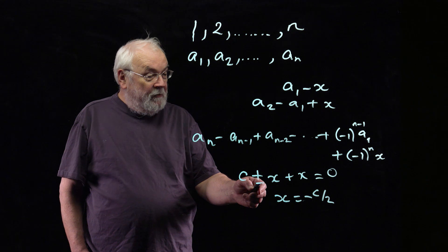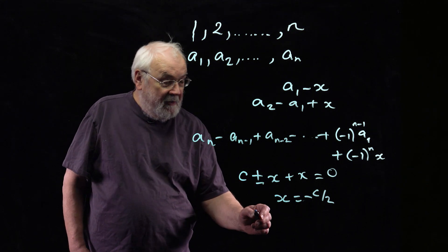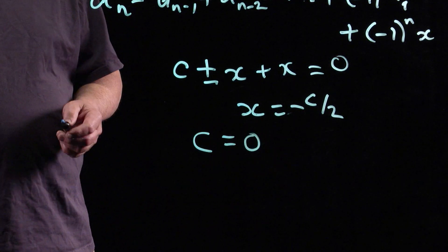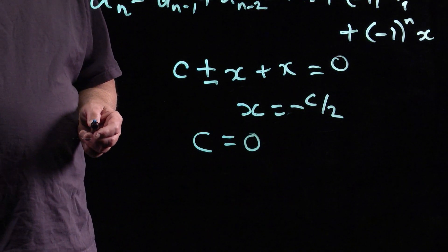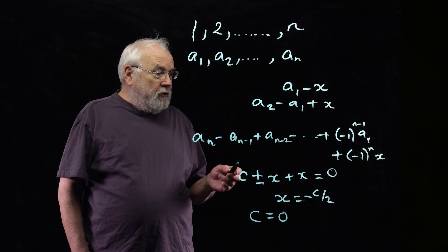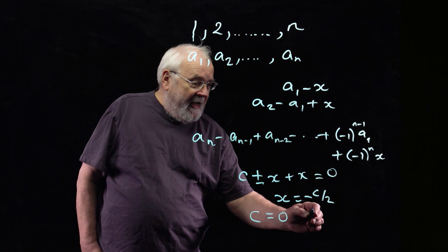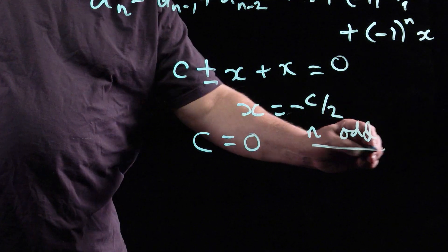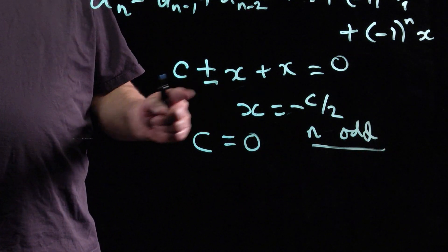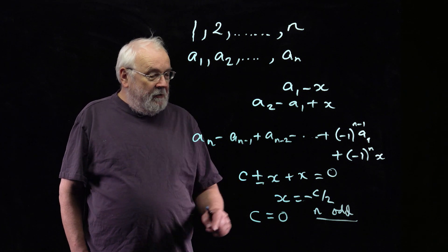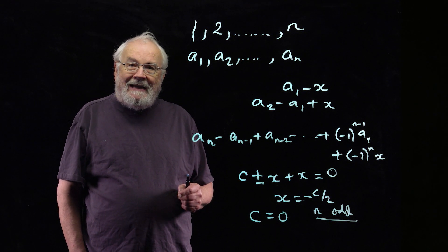On the other hand, if you use the minus sign here, you've got c minus x plus x equals 0, and the condition is just that the constant is 0. In order for the trick to work, you're going to have to have n odd. The number of cards has got to be odd in order to get the sign of x being minus. And then somehow you're going to have to arrange that c is 0.